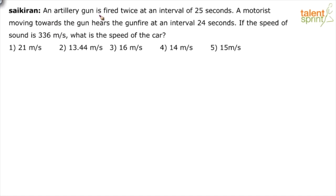An artillery gun is fired twice at an interval of 25 seconds. A motorist moving towards the gun hears the gunfire at an interval of 24 seconds. If the speed of the sound is 336 meters per second, what is the speed of the car?